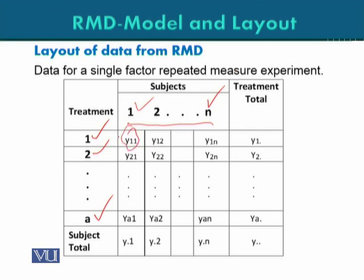Y_1,1 represents the observation from the first treatment when that treatment was applied to the first subject. Y_1,2 is the response from the first treatment when the treatment is applied to the second subject. Similarly, Y_1,N is the response when the first treatment was applied to the N-th subject. In general, Y_i,N is the response from the i-th treatment applied to the N-th subject.